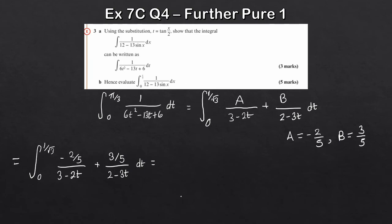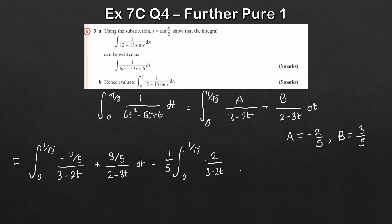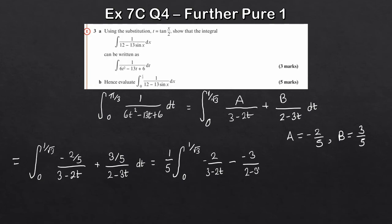We can apply the factor of 1/5 to the front of the integral using linearity. Then, to make integration easier, I'll rewrite the second term: instead of (3/5)/(2 - 3t), I write it as (-(-3)/5)/(2 - 3t), essentially keeping it positive but with -3 in the numerator. This ensures the numerator matches the derivative of the denominator, making the ln integration cleaner.